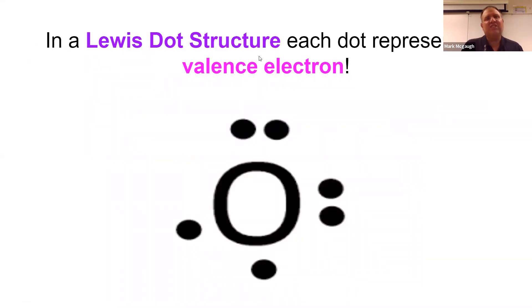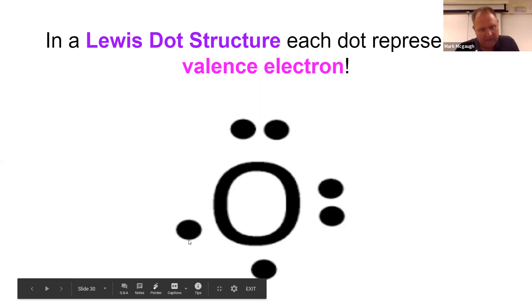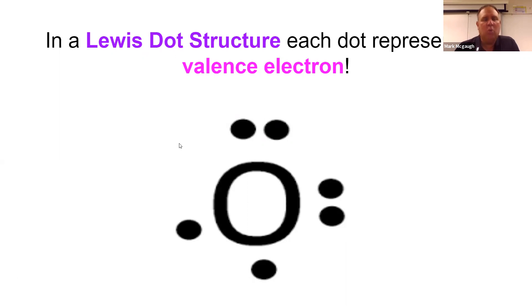Now in a Lewis dot structure, each of these dots represents a valence electron. Notice valence electrons come up a lot because they're important. This is an oxygen: one, two, three, four, five, six. We know oxygen has six valence electrons.